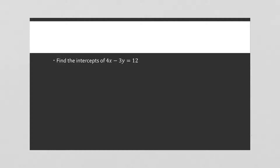Find the intercepts of 4x − 3y = 12. The first thing I always write down is: let x equal 0, let y equal 0. When x = 0: 4(0) − 3y = 12, that gives −3y = 12, divide by −3, so y = −4. The y-intercept ordered pair is (0, −4) — remember, x comes first.